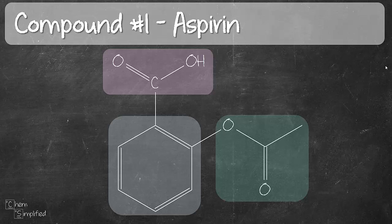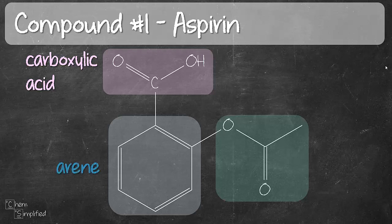The first group on the top there is C double bond O, OH. So the functional group is called carboxylic acid. And then on the bottom there, we have a six-membered ring — six carbons in a ring with alternating double and single bonds. So that's a benzene ring and we call that group arene. And to the right, the last group, you have a C double bond O and next to it is an O which is connected to a carbon — so you have COOC. That is an ester.